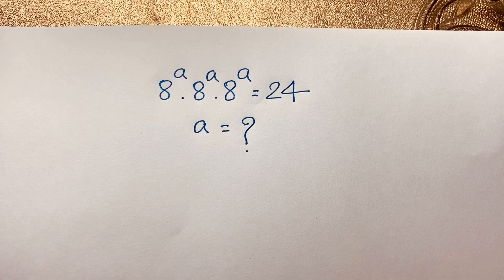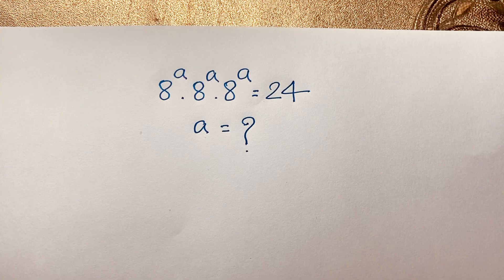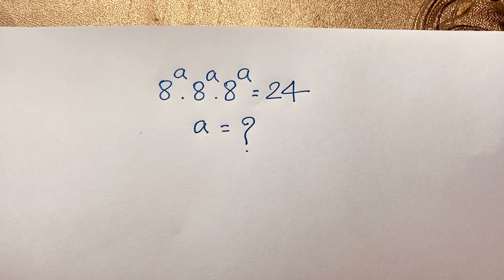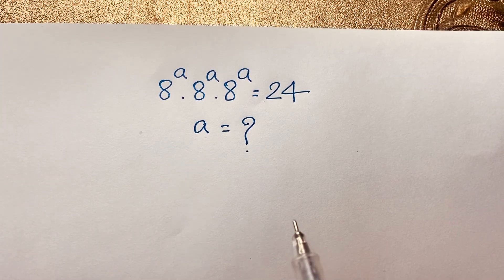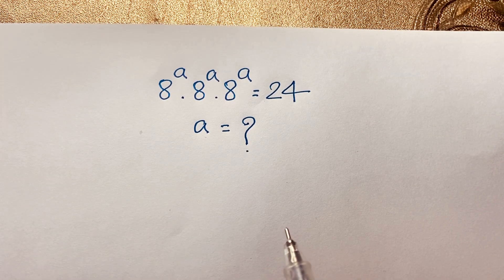Hello everyone. In this video, we have solved a nice math olympiad question. This question is 8 to the power A times 8 to the power A times 8 to the power A is equal to 24. We will find out what is the value of A in this exponential math problem.